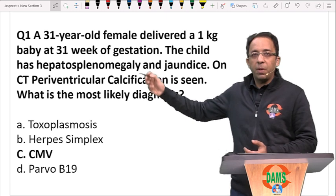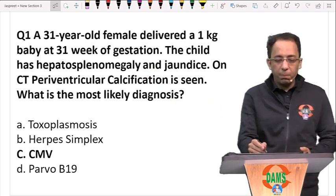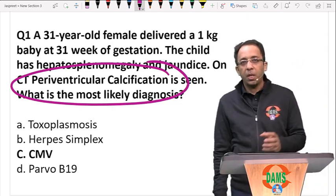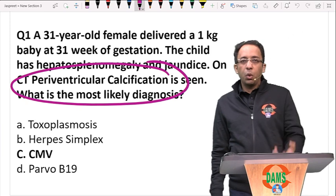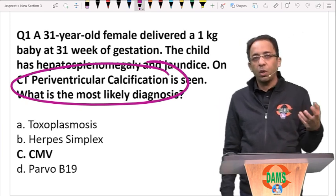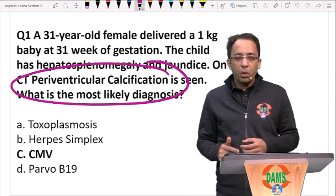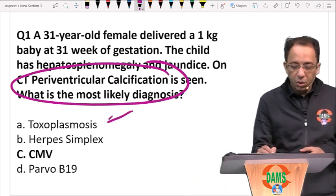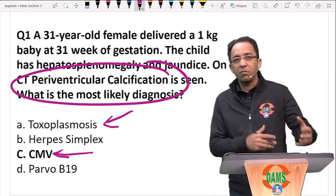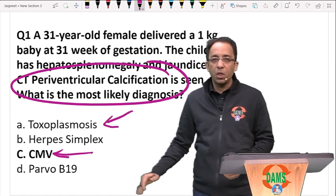This is a female who delivered preterm with hepatosplenomegaly, jaundice, and periventricular calcification. If you see calcium in the brain in a newborn, always think of the TORCH group of infections or intrauterine infection. There are two very important causes: toxoplasma and cytomegalovirus (CMV). You can also have Zika virus, but remember toxoplasma and CMV primarily.